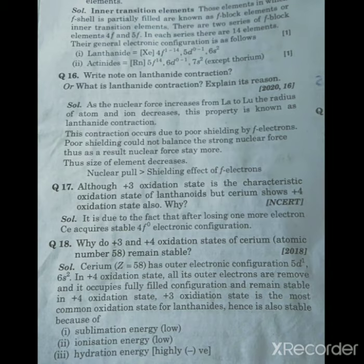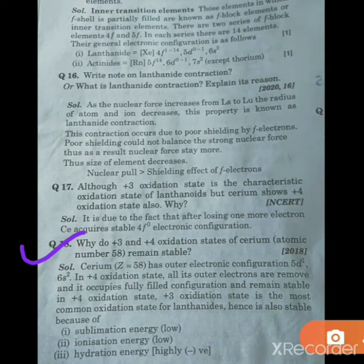Now students, next question. As you can see here: Why do +3 and +4 oxidation states of cerium remain stable? Why are both stable? Just now we saw this consideration. If we talk about +3, that is the general configuration and it remains stable.